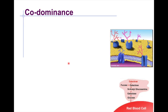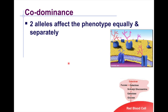We'll be talking about co-dominance. Co-dominance is when there are two alleles that affect the phenotype equally and separately. This means there is not just one dominant or one recessive — they don't have that kind of relationship. There will be multiple alleles that can all be equally dominant, so they will have equal levels of expression.